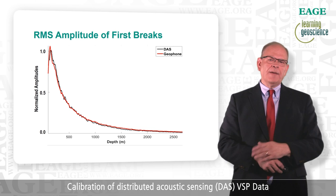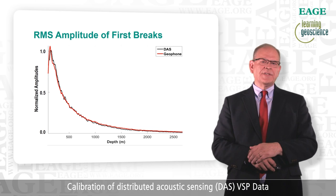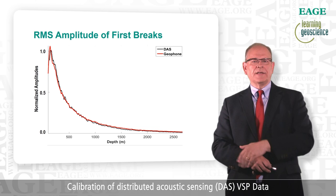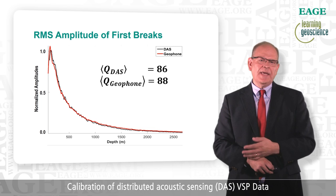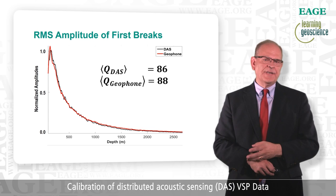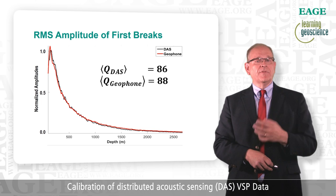Next we look at the amplitude of the DAS data as a function of depth. This plot shows the RMS amplitude of the first breaks on the vertical axis as a function of depth on the horizontal axis. The red line is the geophone data and the black line is the DAS data. After we correct for spherical spreading, we obtain an average Q value of 88 for the geophone data and 86 for the DAS data. From these tests, we learned that we can trust the amplitudes of the DAS data from the top of the well all the way to the bottom of the well.